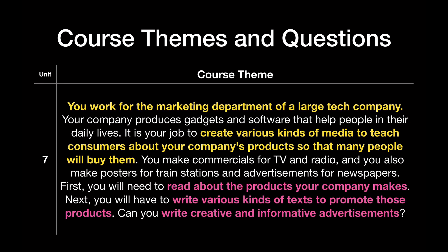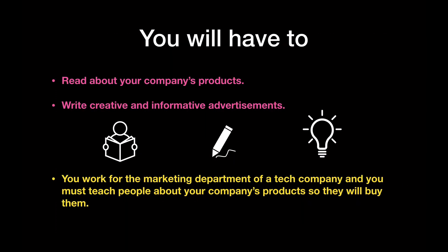What do you have to do? First, you have to read about your company's products. Then, you will have to write various kinds of texts to promote those products. When you write your texts, they should be creative and informative. So, you will have to read about your company's products and write creative and informative advertisements. That's because you work for the marketing department, and your job is to help people select your products.